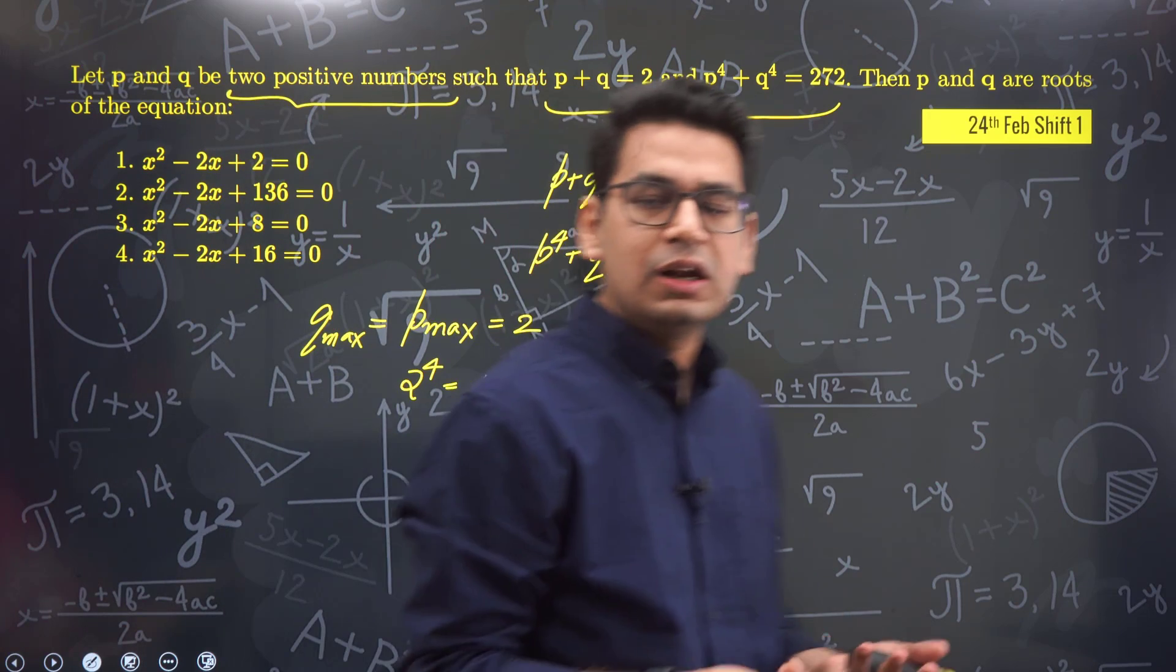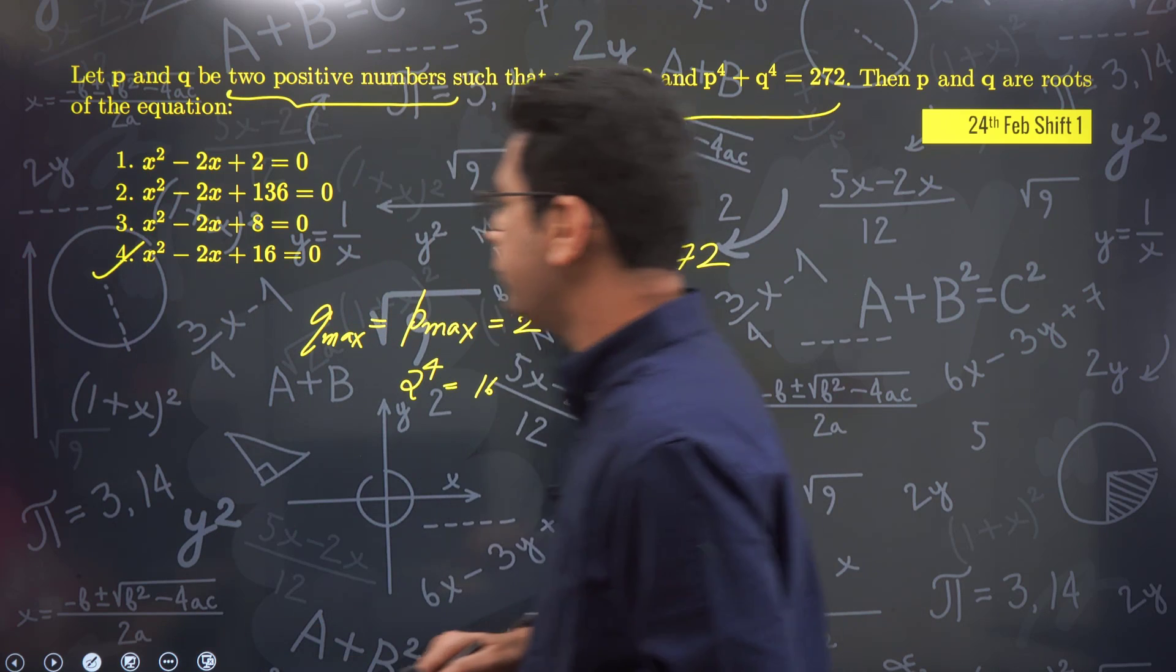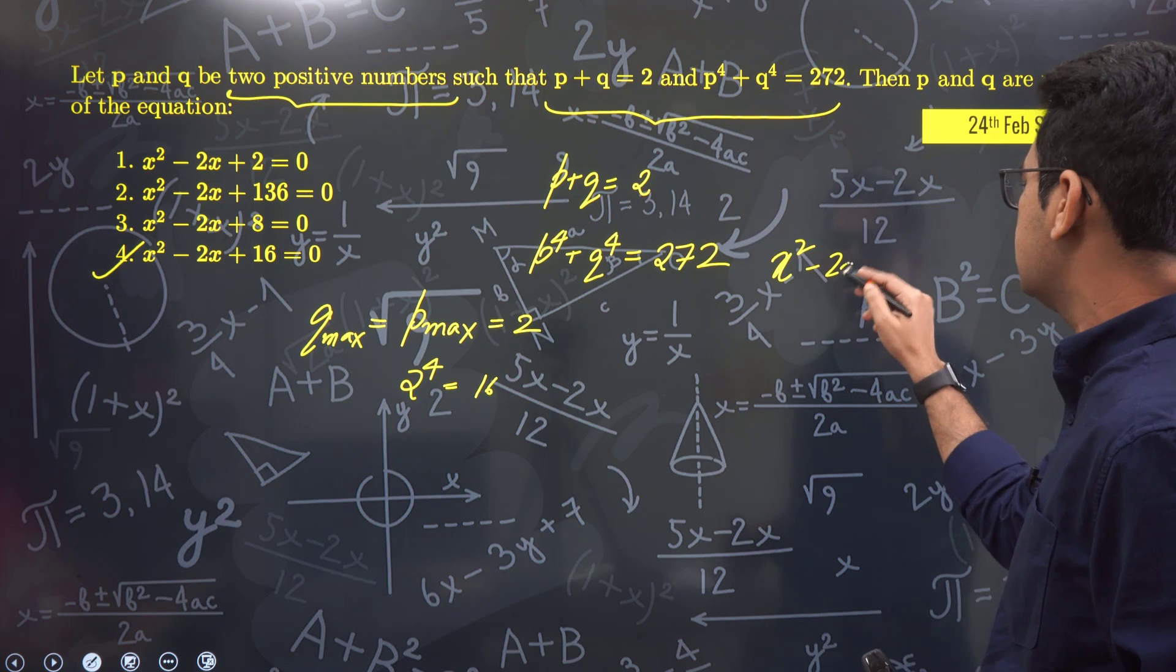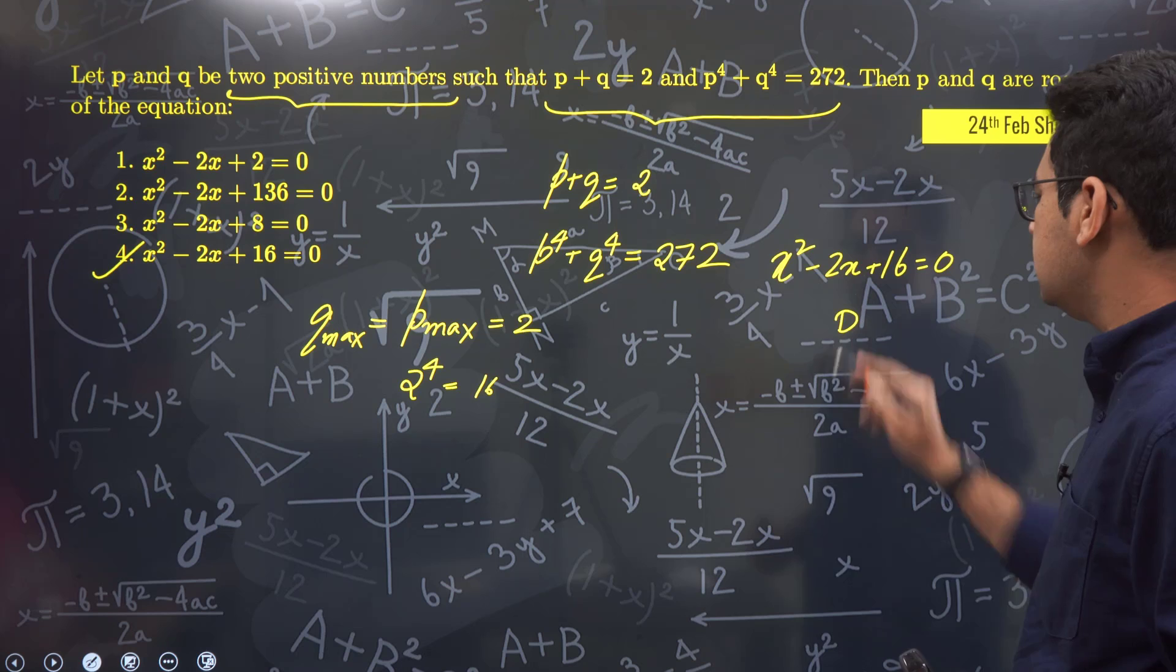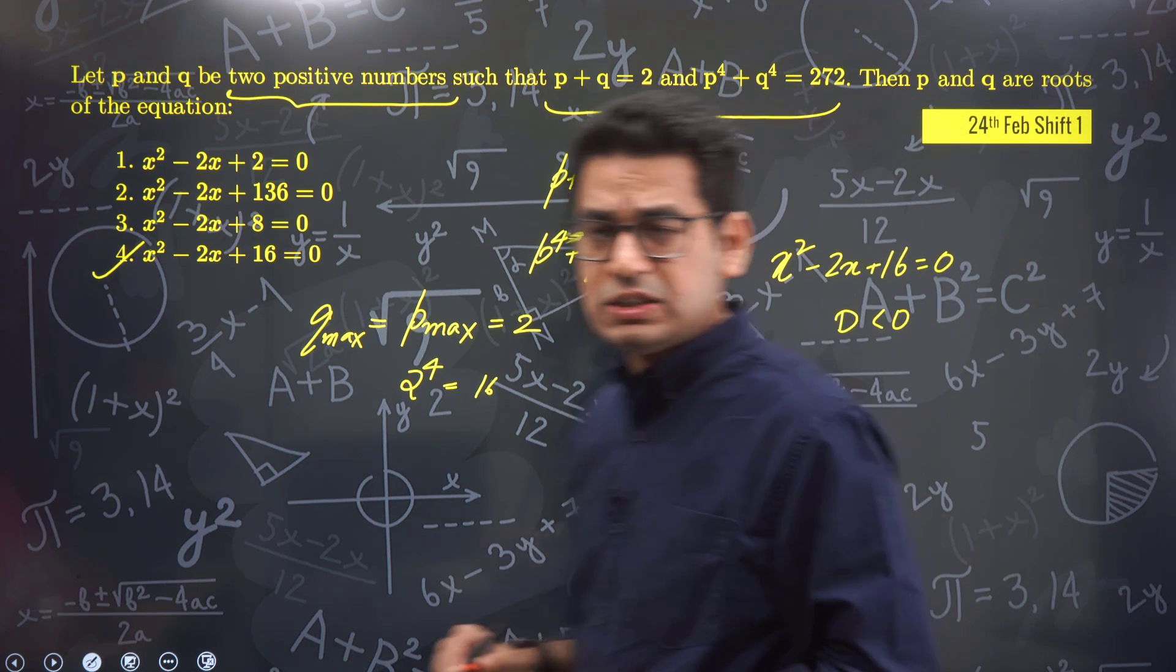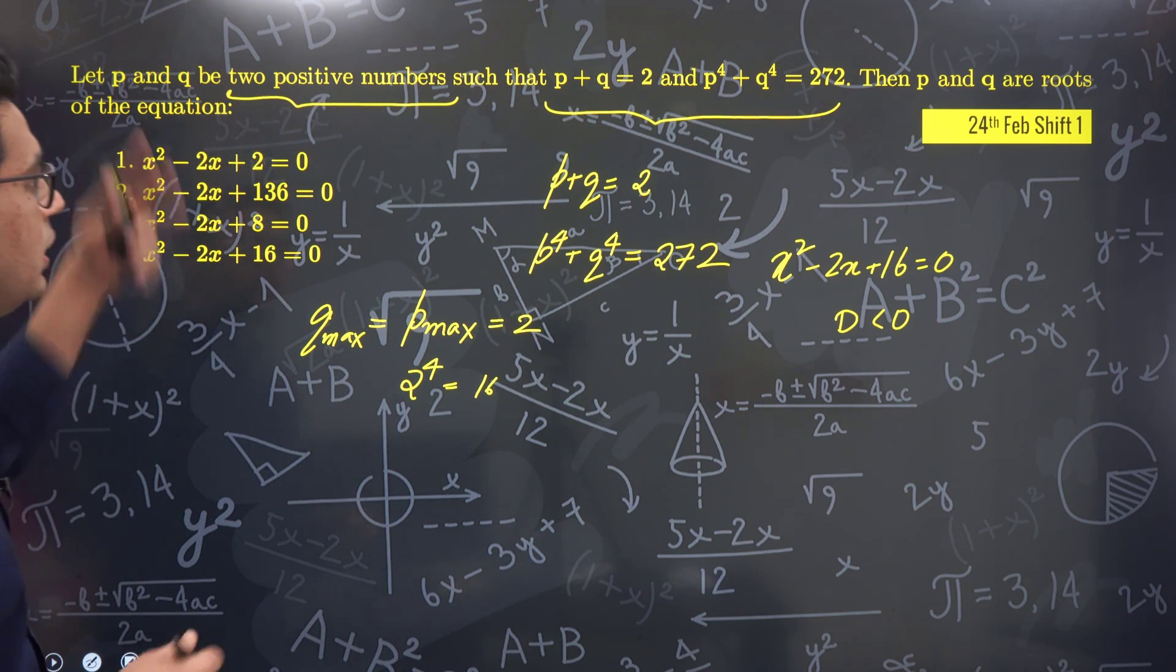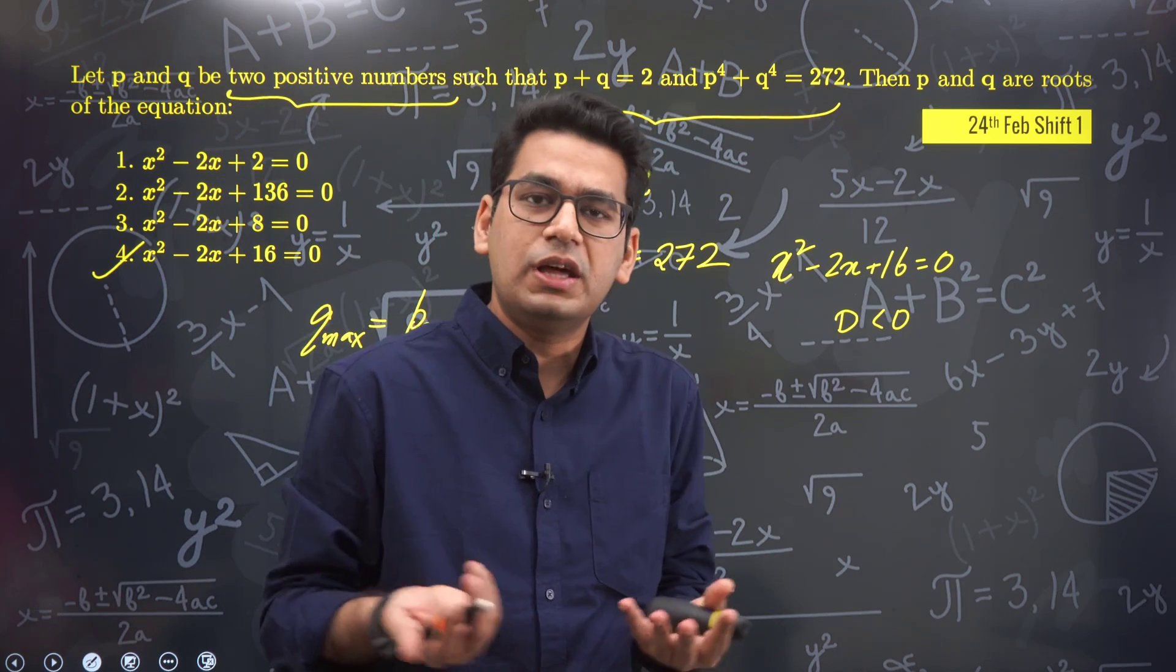This is not possible with real numbers. NTA's answer is probably 16, option 4. If we check that option, it's x square minus 2x plus 16 equal to 0. If you calculate the discriminant d, it's coming out to be less than 0, so d is less than 0. That means they are imaginary numbers.